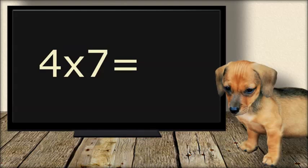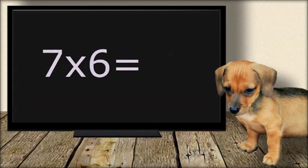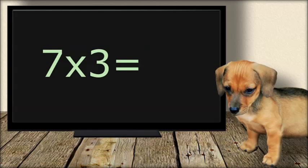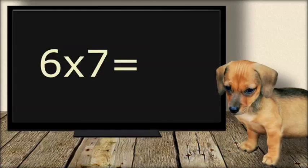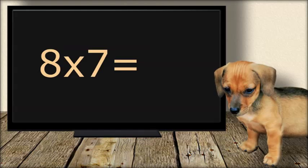Four times seven equals twenty-eight. Seven times seven equals twenty-two. Seven times six equals... Seven times three equals... twenty-one. Six times seven equals forty-two. Eight times seven equals... fifty-six.